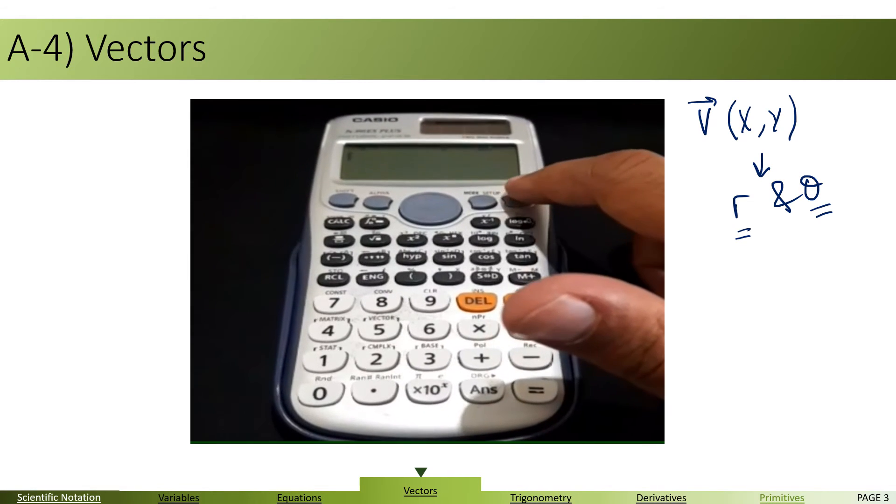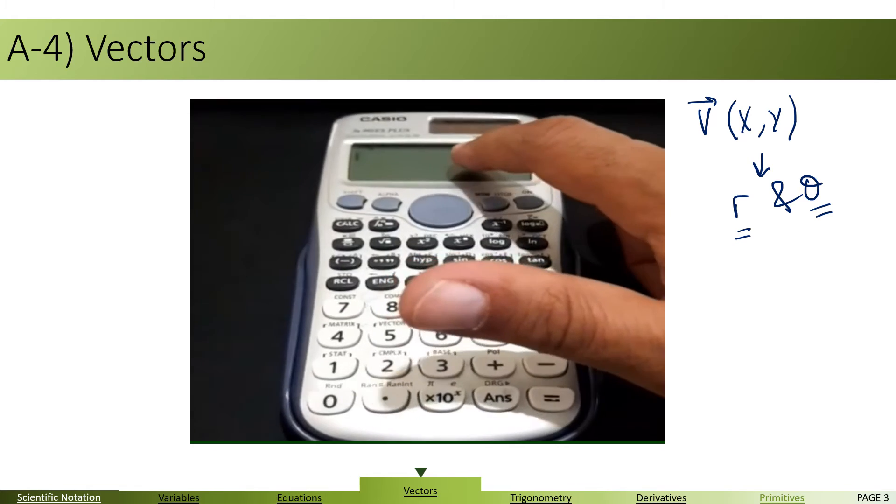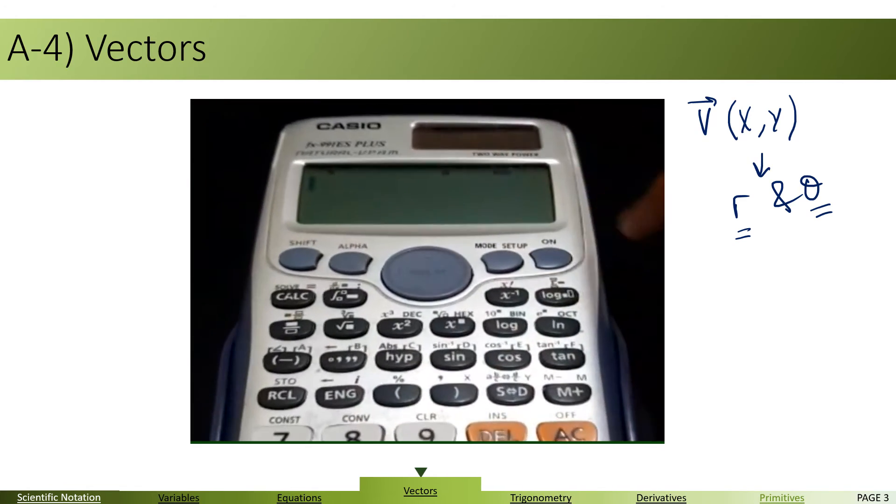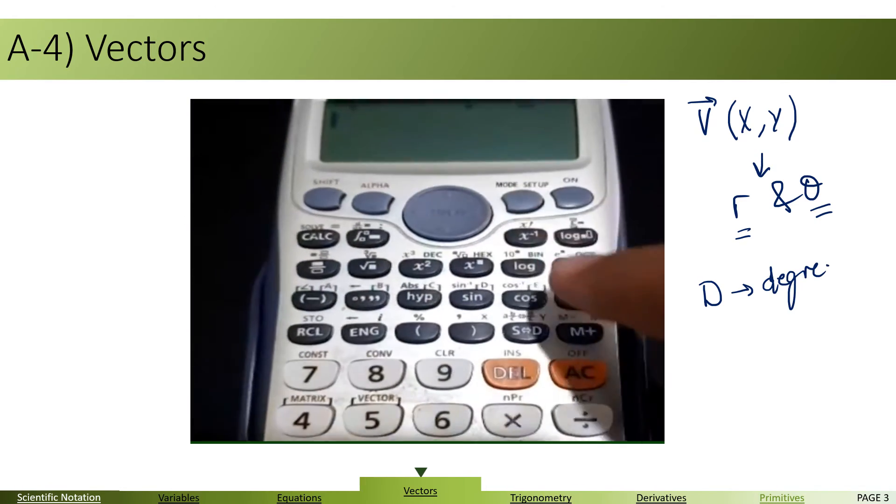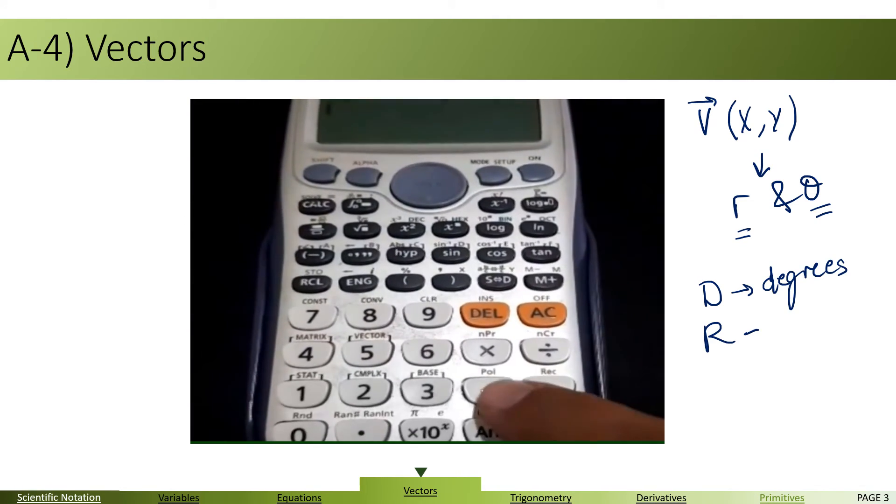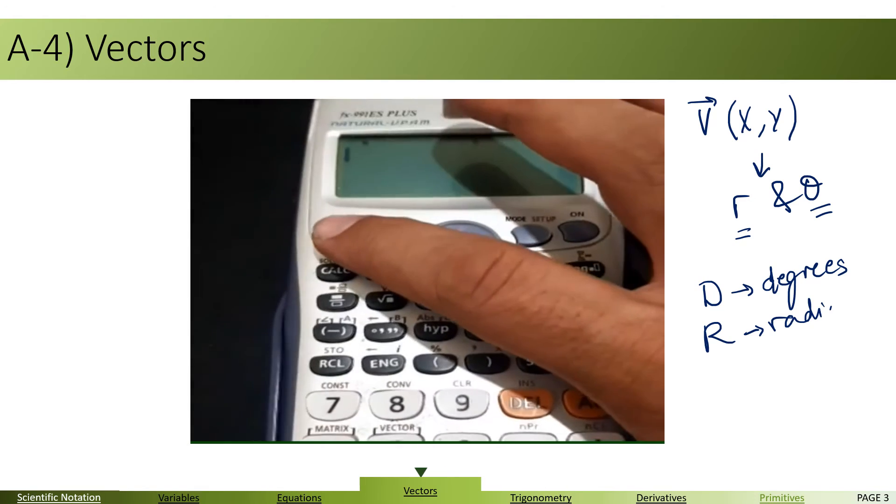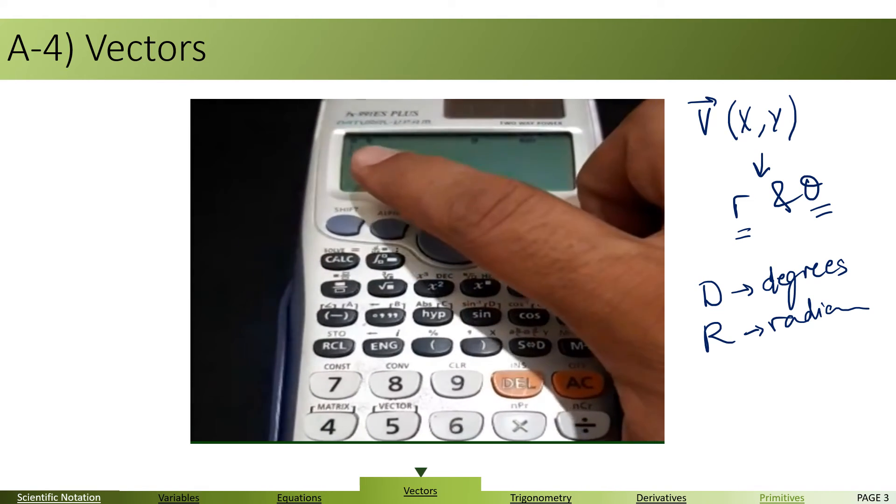First, turn it on. First, make sure that the calculator displays on the top degrees, D as in degree, and not radians, R. You can use radians in case you want that. Now, once you make sure of that, you can go ahead and start inserting values.